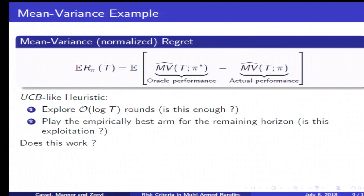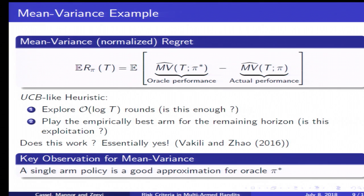Then the question is, will this work? Will this be good? In the sense of exploring, an order of log t rounds may be sufficient—this is typically a Hoeffding type result. But again we are not sure. In the sense of exploitation, I just mentioned that the oracle policy is not a simple policy that chooses a single arm. So it may seem strange that choosing a single arm for the remaining horizon would be optimal.